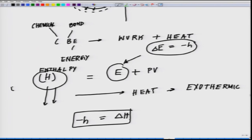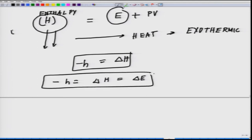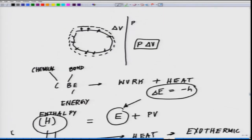The volume change is negligible in most biological reactions — you hardly see a huge change in volume in biological reactions. So what you say is delta H equals delta E. We do not take the PV term really into consideration in biological systems. This is one fundamental concept to keep in mind.